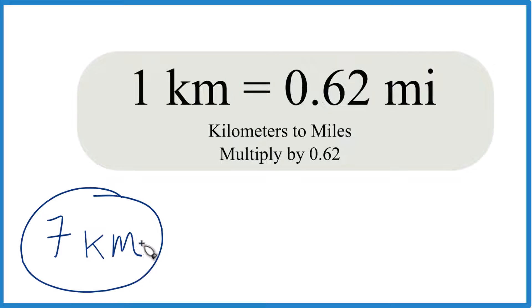So if you have seven kilometers and you want to get that to miles, here's how you do it. One kilometer, that's equal to 0.62 miles.